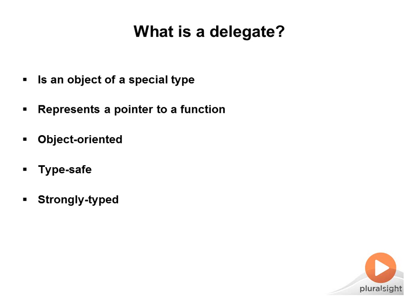All delegates are strongly typed. This means that a delegate can only point to methods whose signatures match its own. The .NET Framework declares two delegate-related classes in the system namespace: the delegate class, which represents a single delegate, and the multicast delegate class, which derives from the delegate class and adds the ability to point to more than one function at the same time. All delegates we create automatically and implicitly inherit from the multicast delegate class, meaning a delegate can point to more than one function.